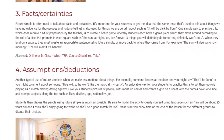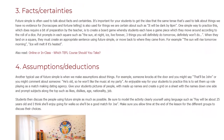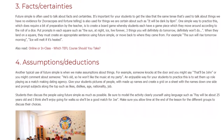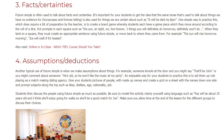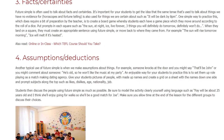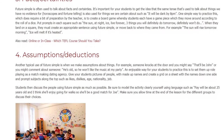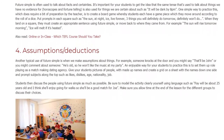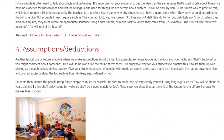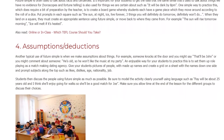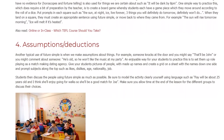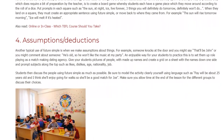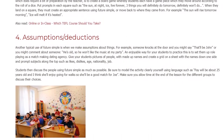4. Assumptions and Deductions. Another typical use of Future Simple is when we make assumptions about things. For example, someone knocks at the door and you might say 'That'll be John,' or you might comment about someone: 'He's old, so he won't like the music at my party.'